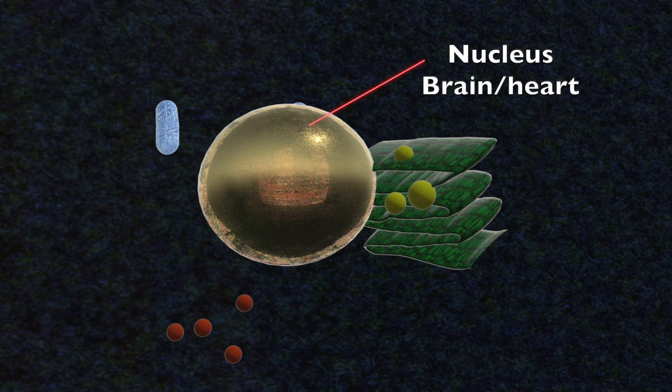At the heart of the cell lies the nucleus, which functions like the brain or heart. This is protected by its own nuclear membrane.